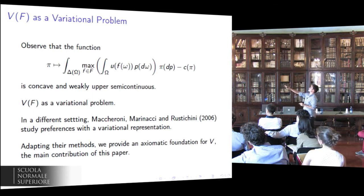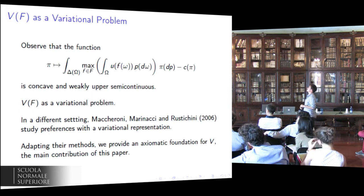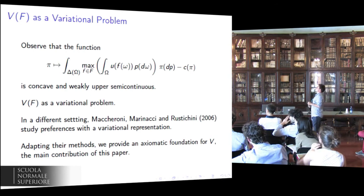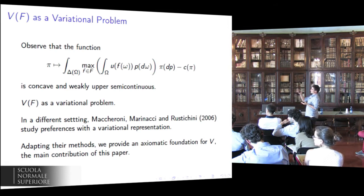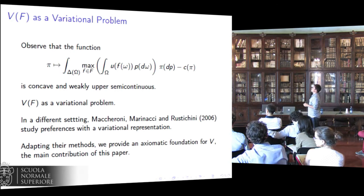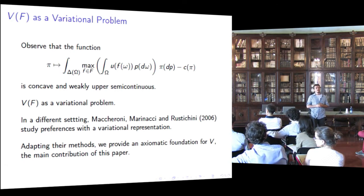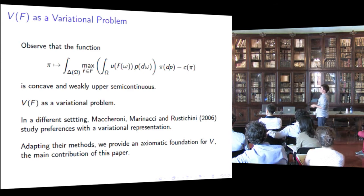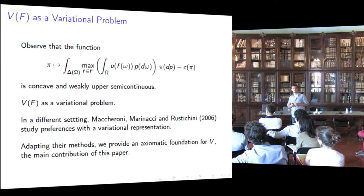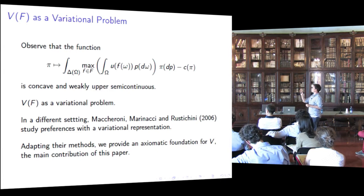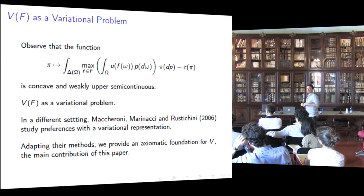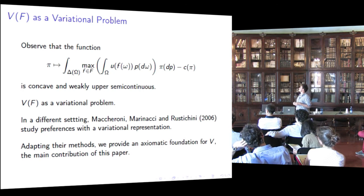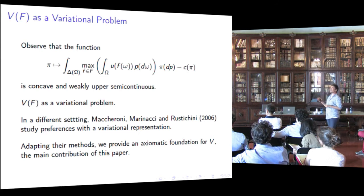Observe that the displayed function mapping channels into the extended real line is concave and weakly upper semi-continuous. As a consequence, the value of the menu V(F) can be seen as the result of the maximization of a concave and weakly upper semi-continuous function, which is the dual problem to the most classical variational problem. This observation is crucial for our paper because Maccheroni, Marinacci, Rustichini 2006 study preferences with a variational representation. As a consequence, adapting their methods to our setting, we can provide an axiomatic foundation for V, for the value function, which is the main contribution of this paper.